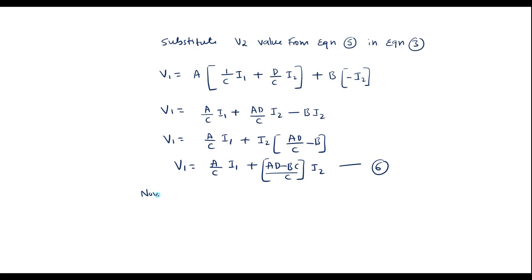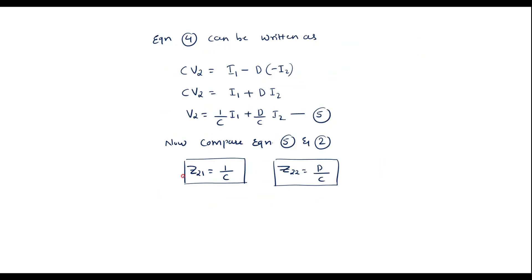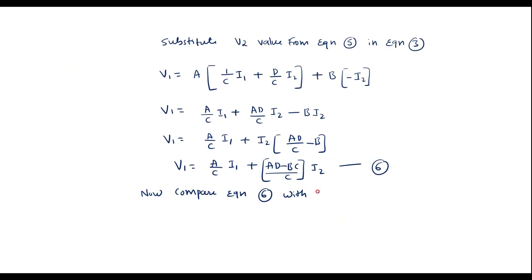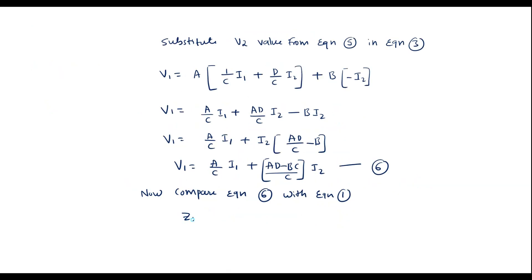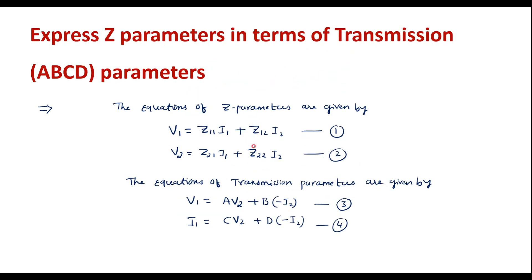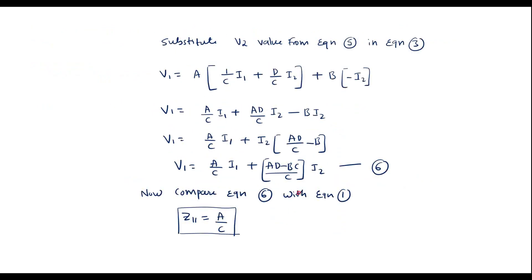Now compare equation 6 with equation 1. In equation 1, the coefficient of I1 is Z11, so Z11 = A/C. In equation 1, the coefficient of I2 is Z12, and here the coefficient of I2 is (AD − BC)/C, so Z12 = (AD − BC)/C.